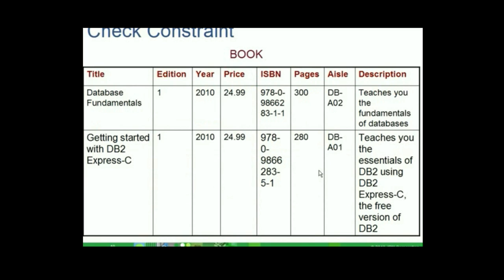Check constraints enforce domain integrity by limiting the values that are accepted by a column. The author relation does not have a suitable attribute to explain this easily, so I will take the example of the book relation. The year attribute is the year in which a particular book is published. Would it be meaningful to have a year greater than the current year 2010?